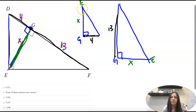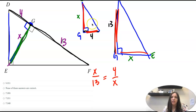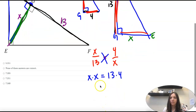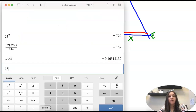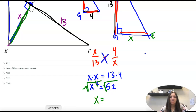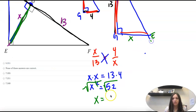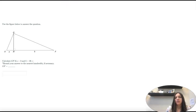So x goes to 13 as 4 goes to x. We cross multiply: x times x equals 13 times 4. X times x is x squared, and 13 times 4 is 52. To get rid of the square we take the square root on both sides, so x equals the square root of 52, which is 7.211.